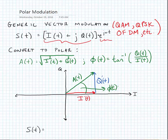And if we rewrite our expression for the generic vector modulation in the polar domain, it would look like the following: A(t) times e^(j(ωt + φ(t))).